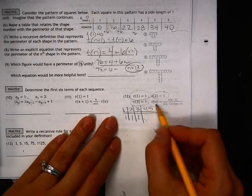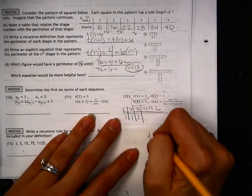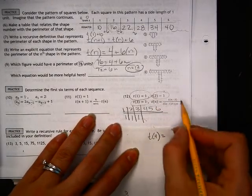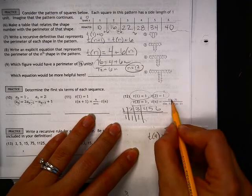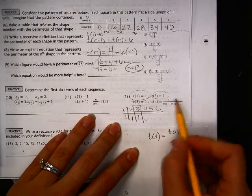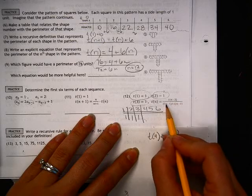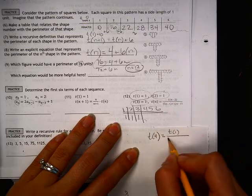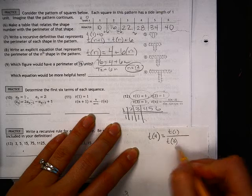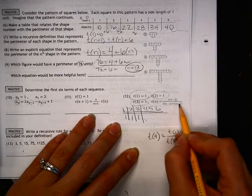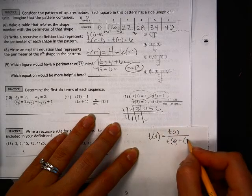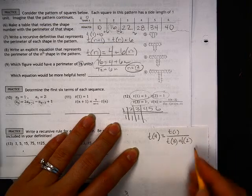Okay, so our fourth term, T of 4, is equal to 4 minus 3 is 1, 4 minus 1 is 3, and 4 minus 2 is 2.